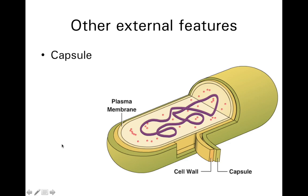In addition to that, sometimes some types of bacteria will produce another layer — sort of a chemical layer external to the cell wall — called a capsule. And the capsule, as you can see here, is outside of that cell wall. Its function is that it's kind of slimy or mucus-like.